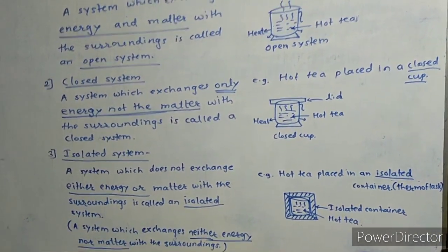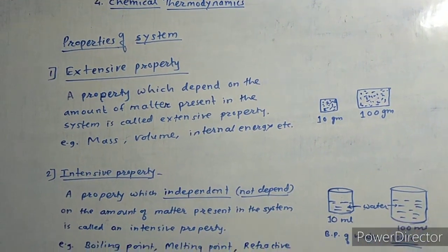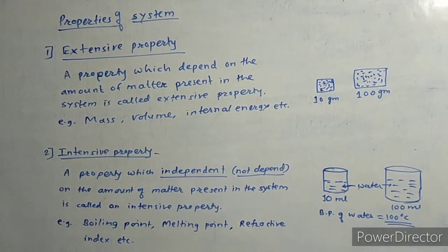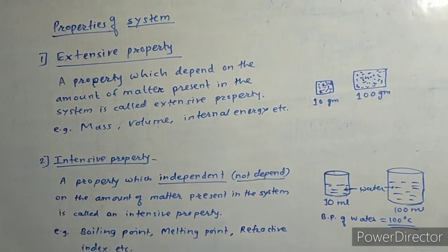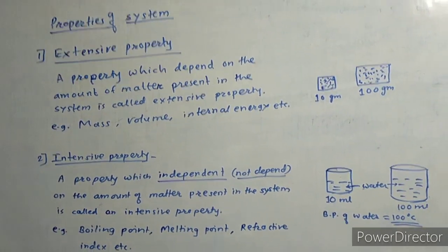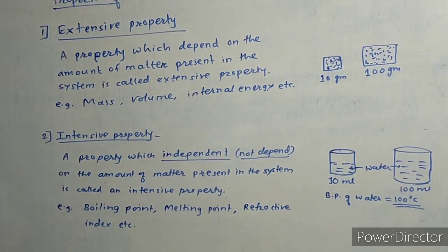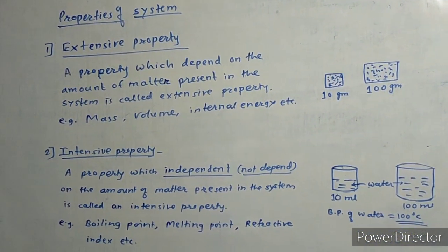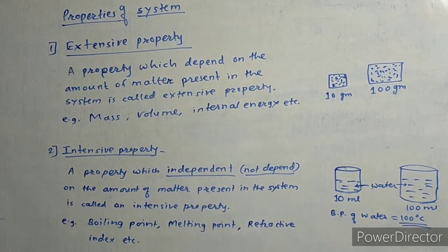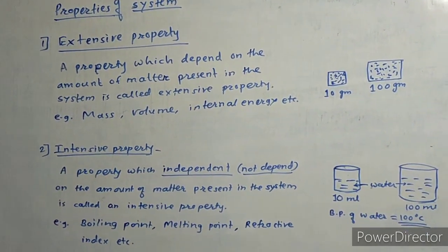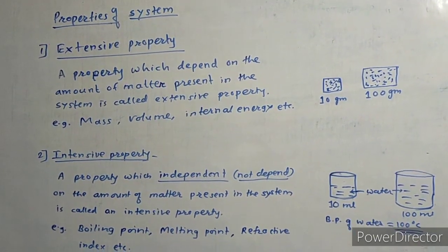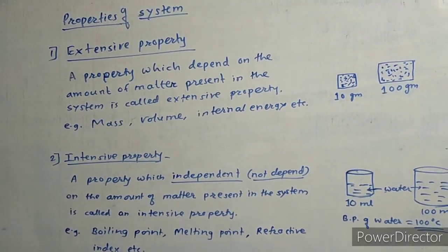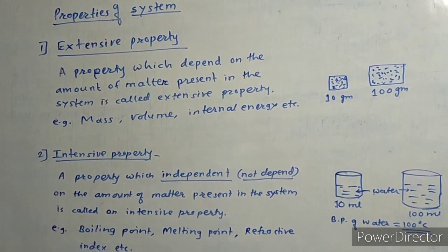Now let's look at the properties of a system. The first is the extensive property. A property which depends on the amount of matter present in a system is called an extensive property. Examples include mass, volume, and internal energy. In the diagram, a box with 10 grams and another with 100 grams show that as the quantity of matter changes, the mass also changes.